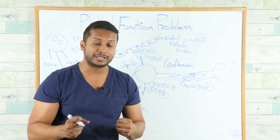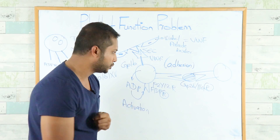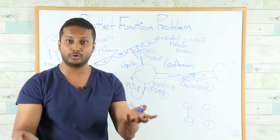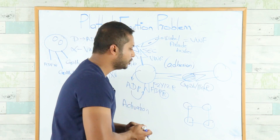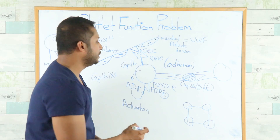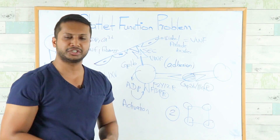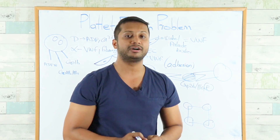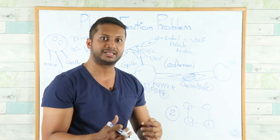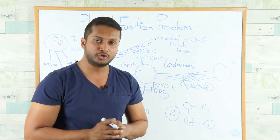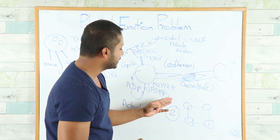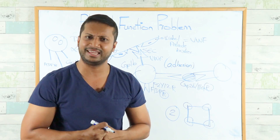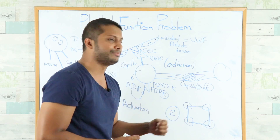The primary platelet plug is not yet a mature clot. To form a mature clot, you need to convert fibrinogen into fibrin — forming connections between fibrinogen molecules. To do this, you need Factor 2, which is part of the coagulation cascade. Factor 2 converts fibrinogen to fibrin, but it also needs Factor 13 to act as the glue to form a mature fibrin clot.